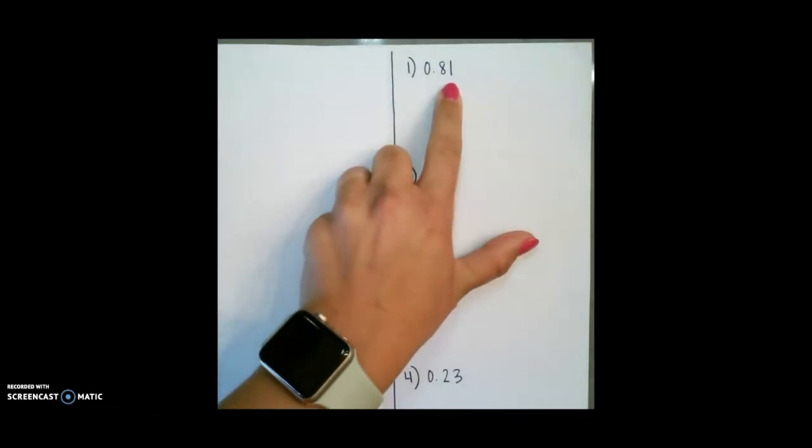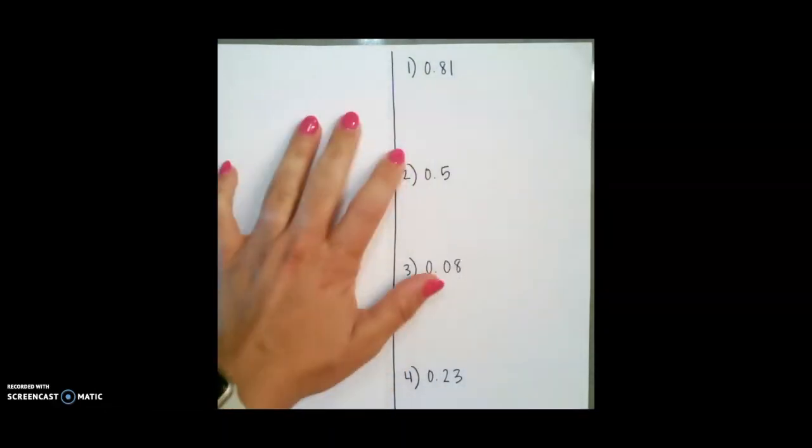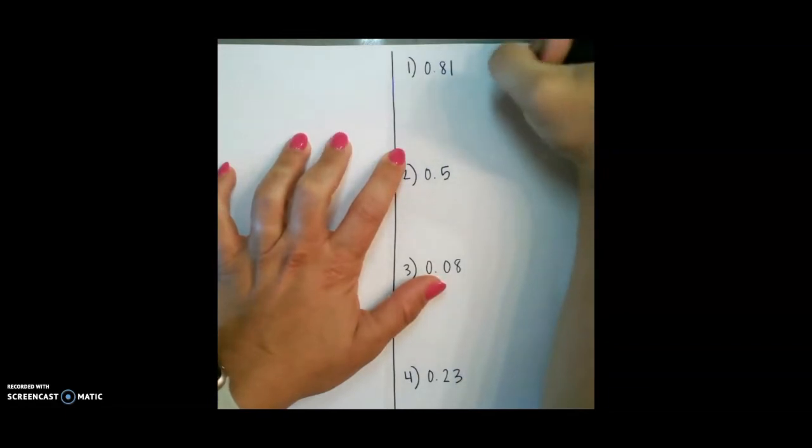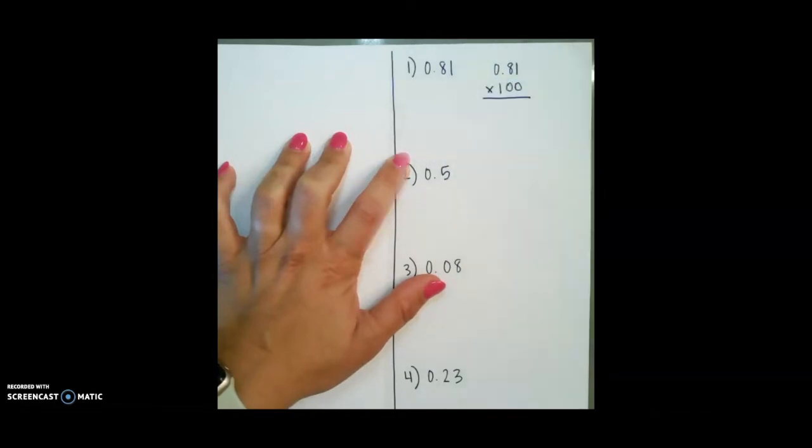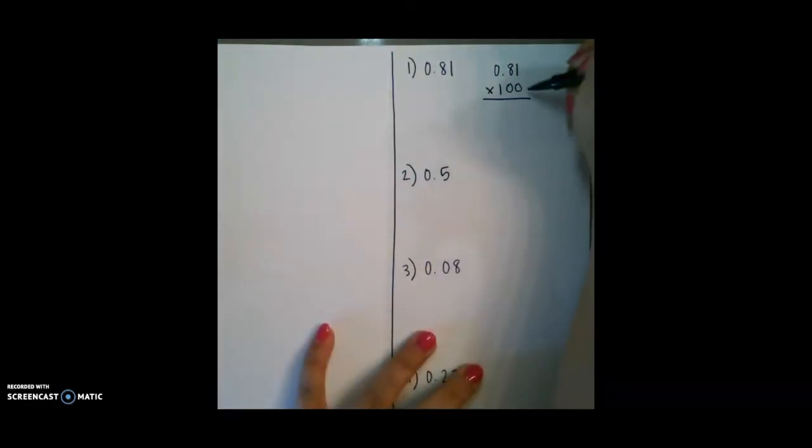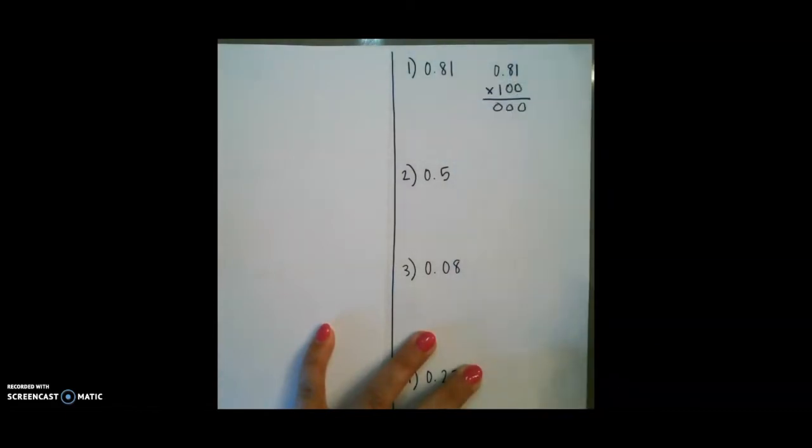Our first one is 0 and 81 hundredths, or 0.81. So you would multiply this by 100 to get your percent form. 0 times 1 is 0, 0 times 8 is 0, and 0 times 0 is 0.